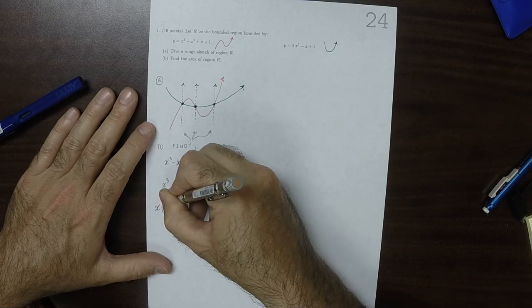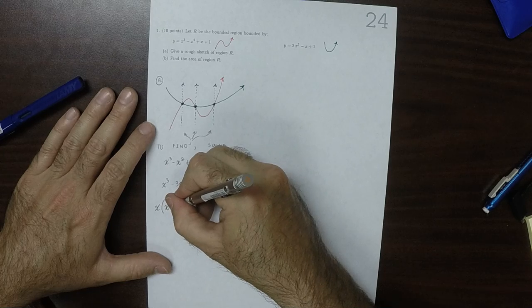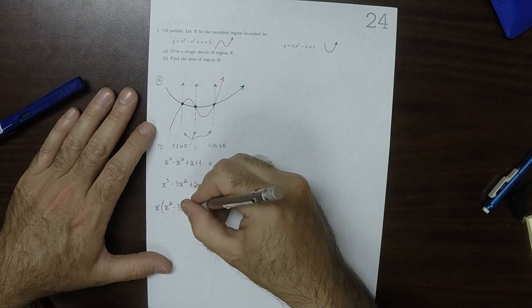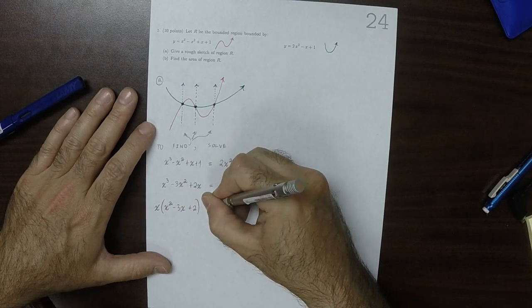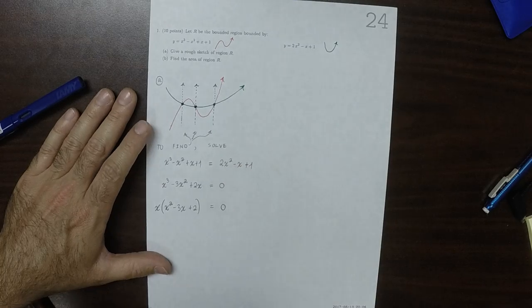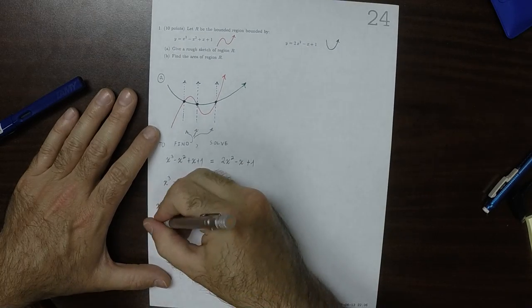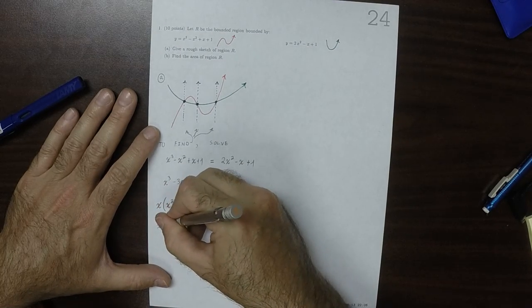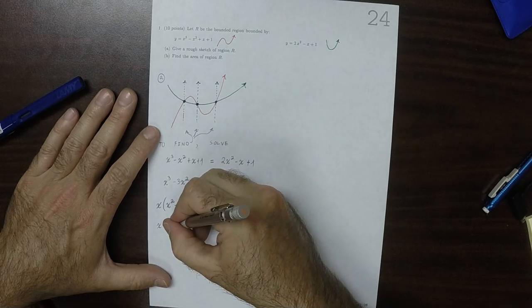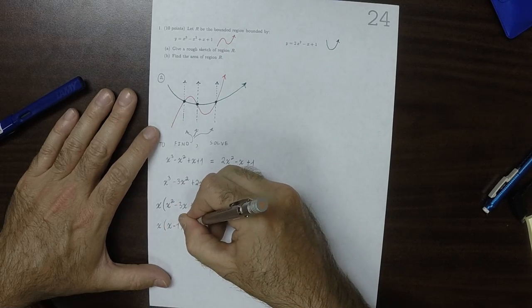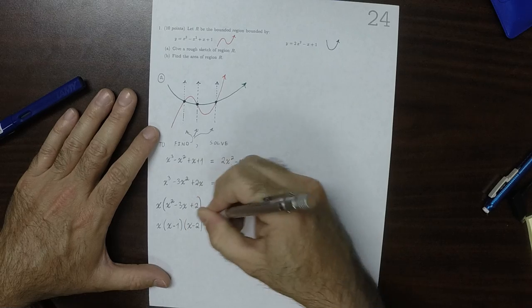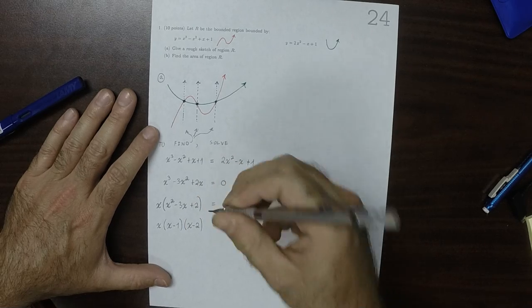Then I can see that there's x's in all terms, so I'll factor that out and get x squared minus 3x plus 2. And then that quadratic factors into x minus 1, x minus 2, equal to 0.